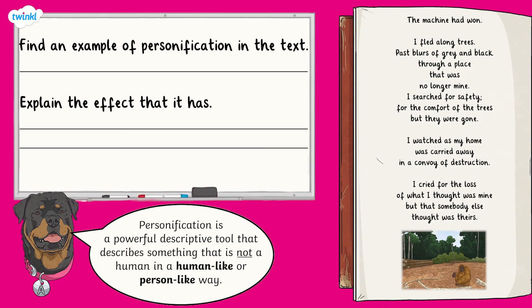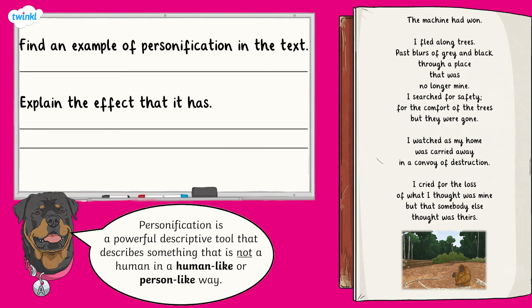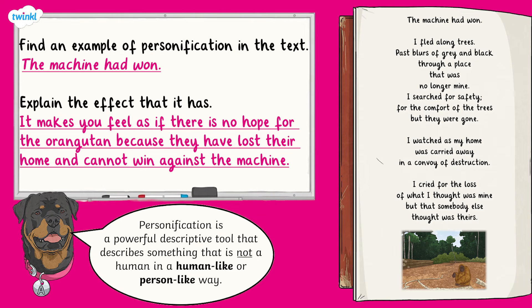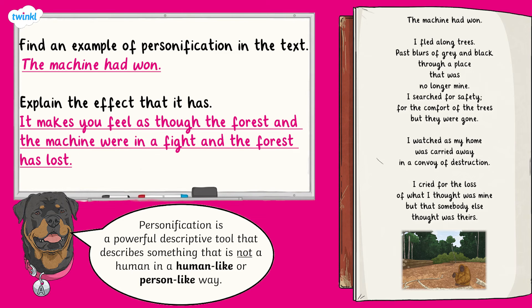For our final question, you are being asked to find an example of personification in the final part of the poem and explain the effect that it has. You may wish to write your answer down or say it out loud. Pause your video now and hit play when you have read through the new text and have an answer. An example of personification is 'the machine had won.' The effect is that it makes you feel as if there is no hope for the orangutan because they have lost their home and cannot win against the machine. You may have also written: it makes you feel as though the forest and the machine were in a fight and the forest has lost. Well done if you found an example of personification and explained the effect that it had. Excellent work.